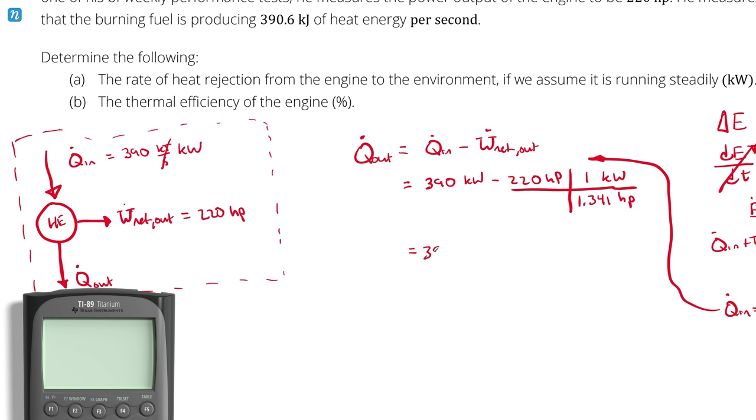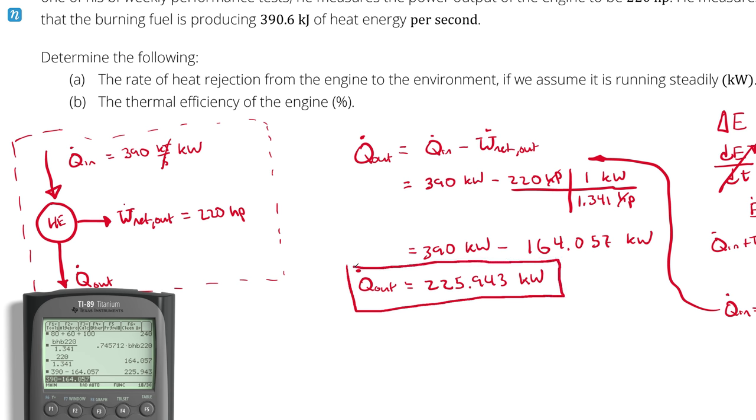Anyway, I'm getting a little bit off on a tangent here. 390 kilowatts, my horsepower and horsepower are going to cancel, minus 220 divided by 1.341. So that would be 220 divided by 1.341. 220 divided by 1.341, 164.057 kilowatts. So 390 minus 164.057 gives me 225.943 kilowatts. So that's actually my answer for part A. Whatever heat came in which didn't get converted into net power output leaves.